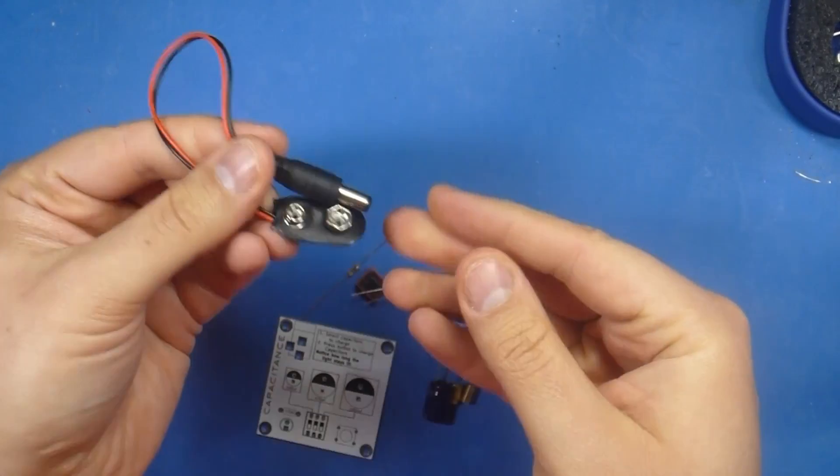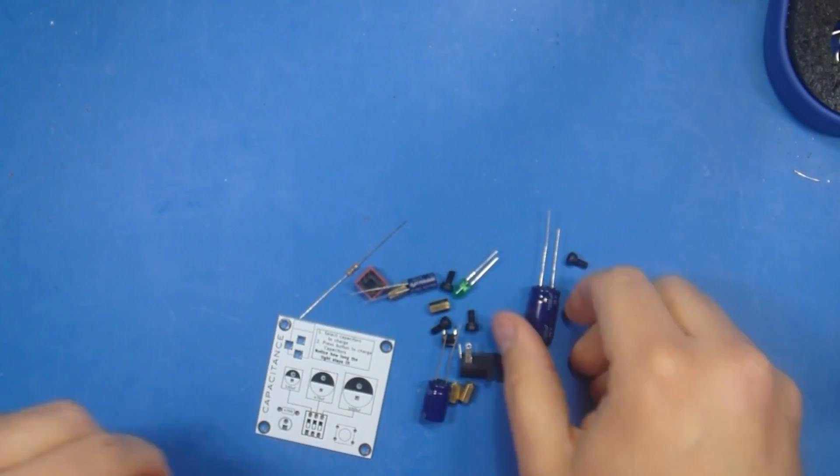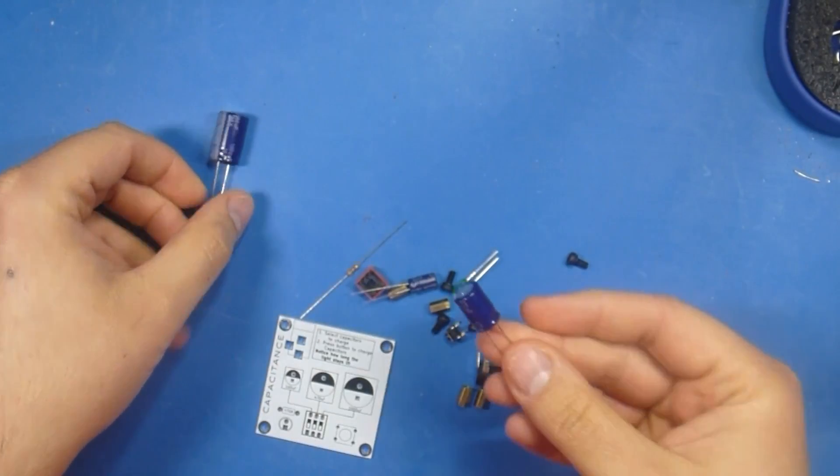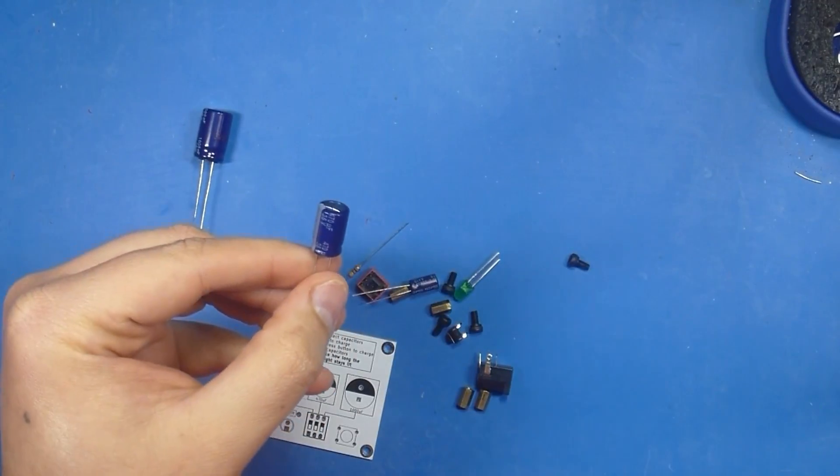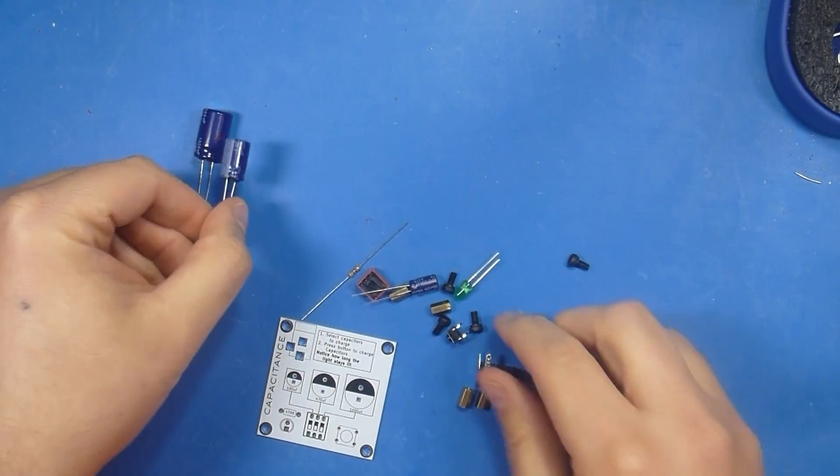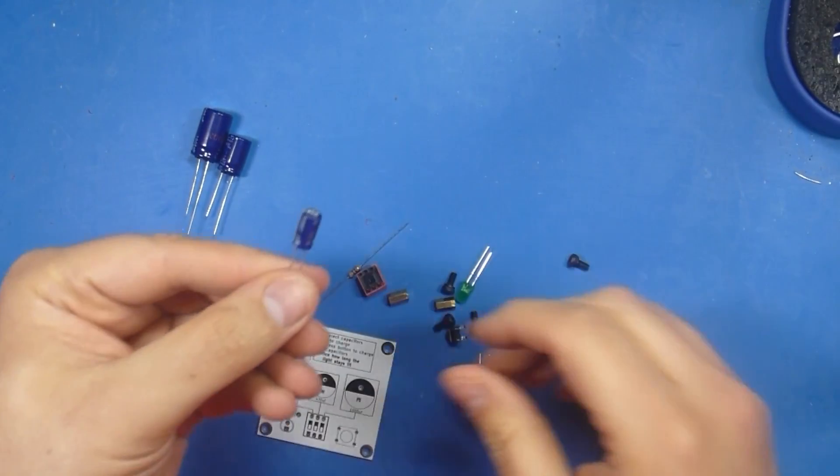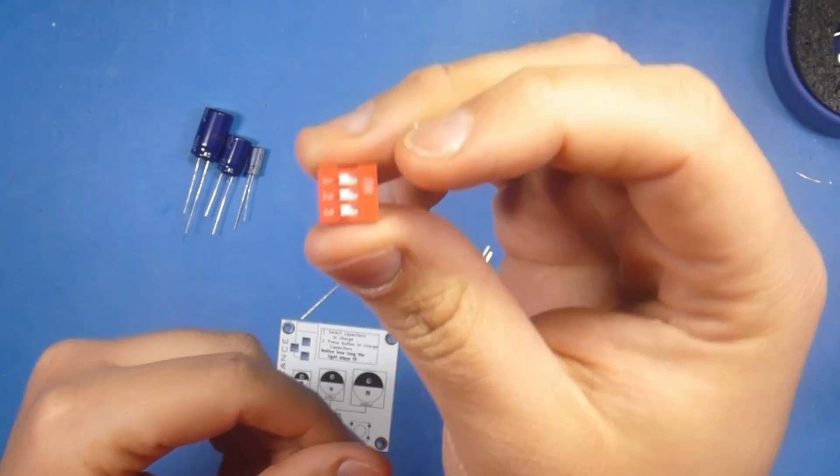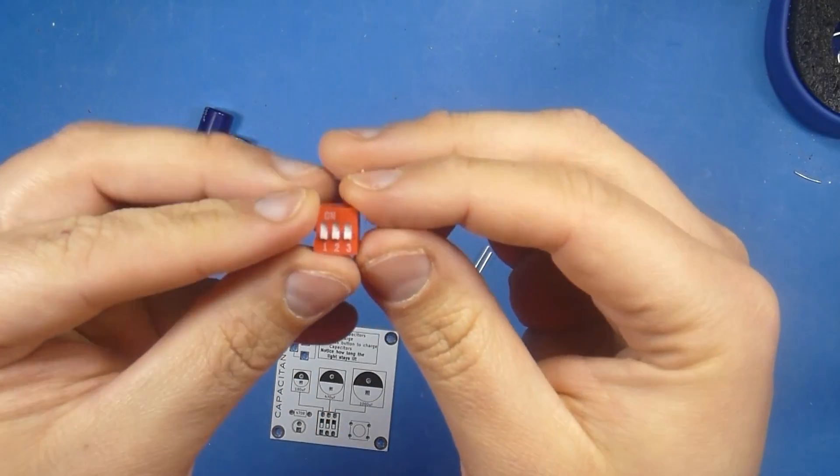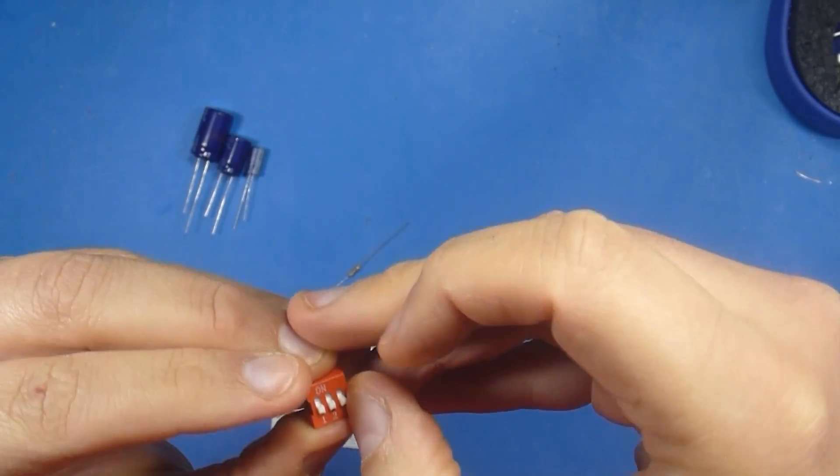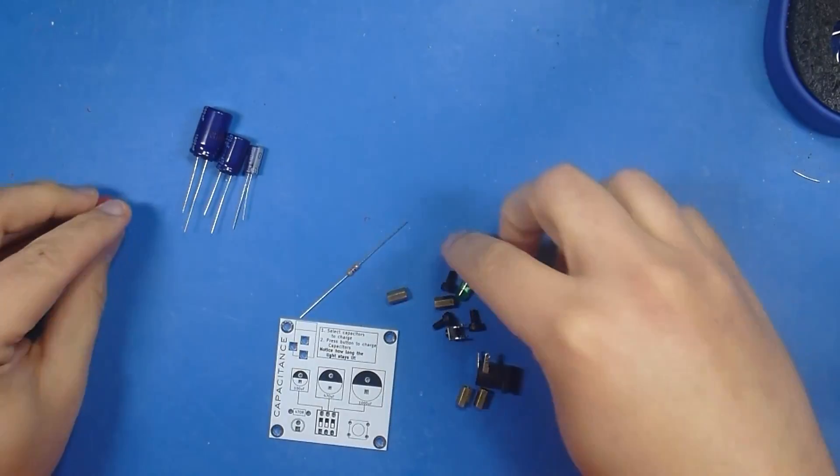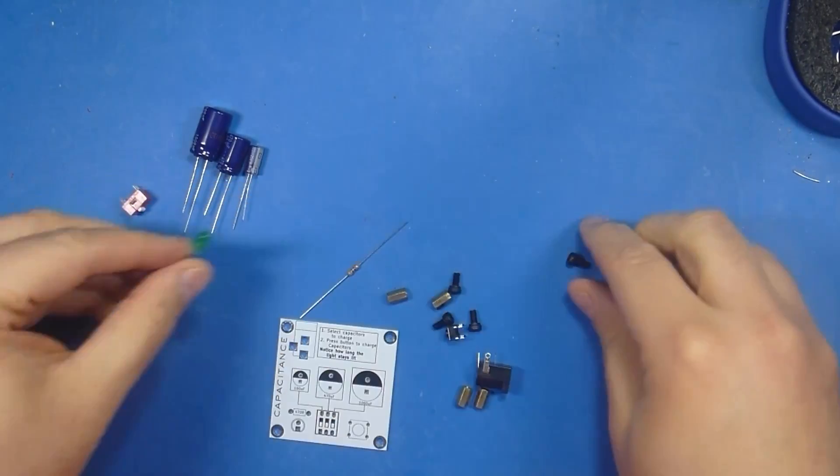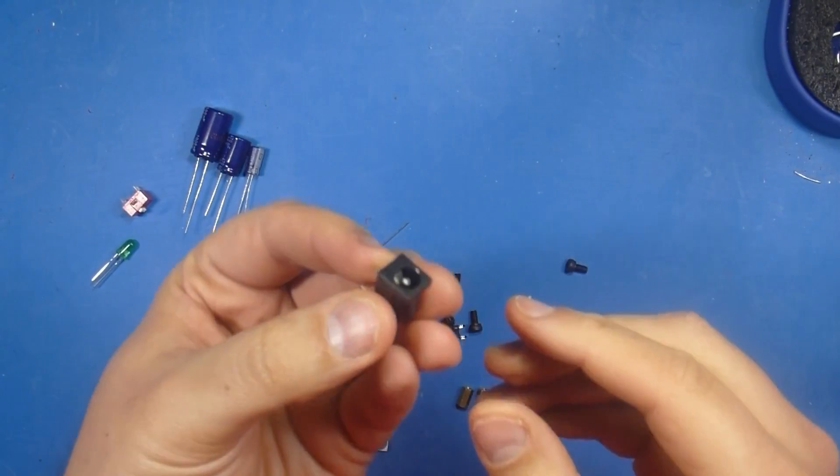For starters we have our 9 volt to barrel jack connector. We have a 1000 microfarad capacitor. We got here a 470 microfarad capacitor. And the smallest one is a 100 microfarad capacitor. Next we have here a dip switch. It's probably red. It might not be. It's going to have three nice little buttons that you can flip on and off. You're going to have a 5 millimeter LED.